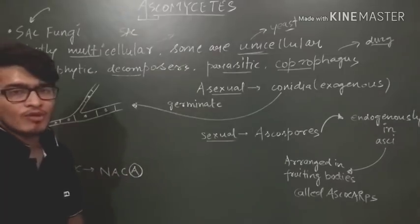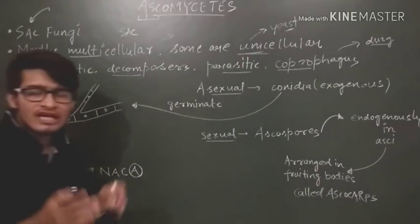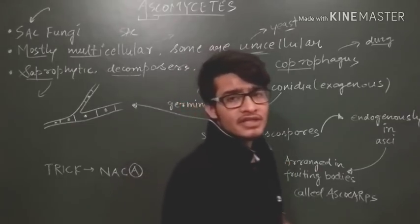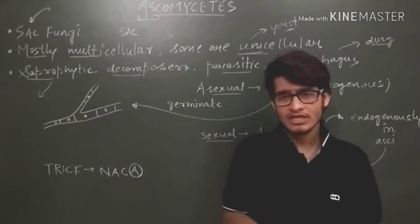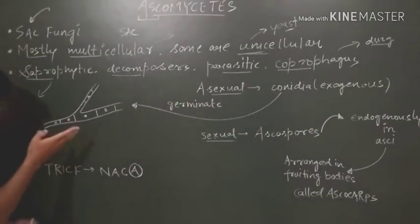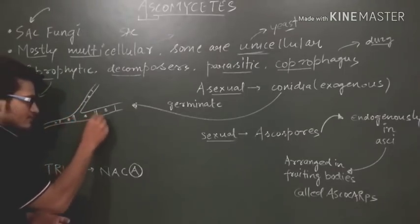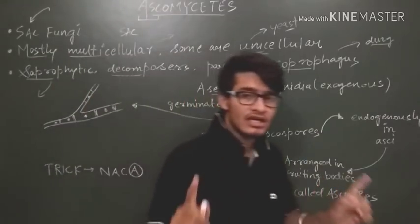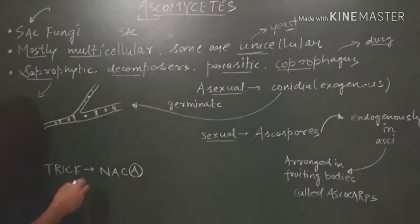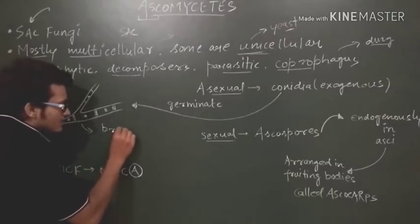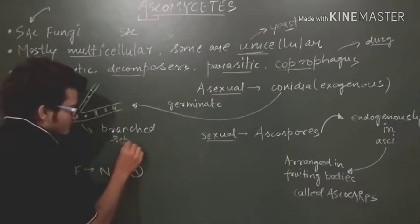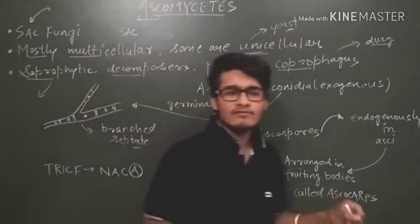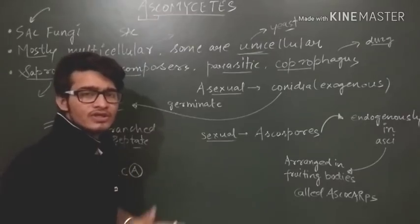In Phycomycetes we talked about that there is no septa - there is an aseptate condition - and that's why many nuclei are present in a single compartment, forming the coenocytic condition. But in this case the mycelium is branched as well as the septa are present, and due to the septa only one nucleus is present in a single compartment. It is not coenocytic at all. So in case of the Ascomycetes the mycelium is branched and septate.